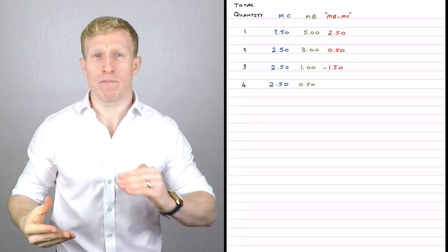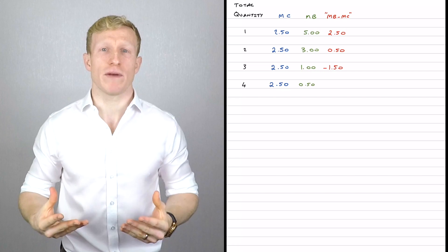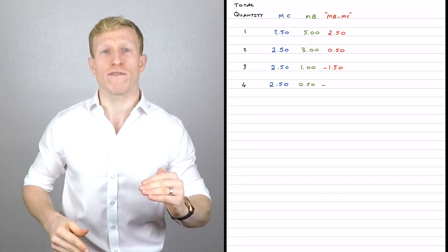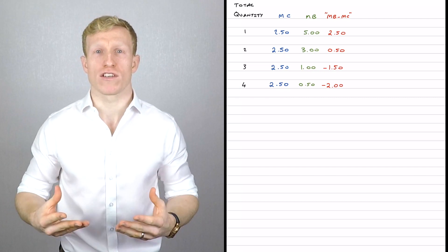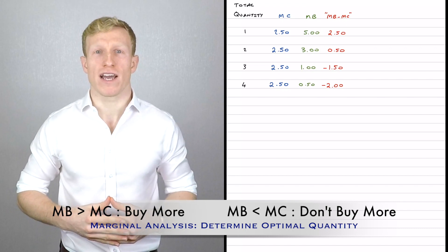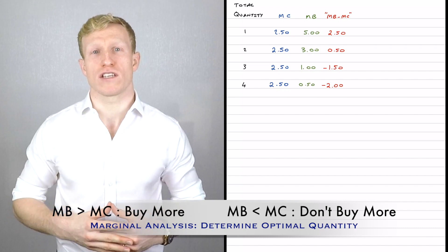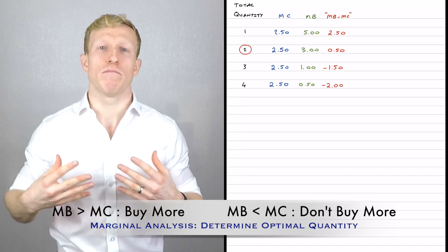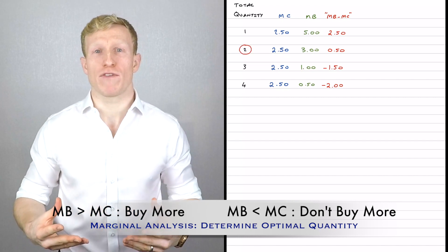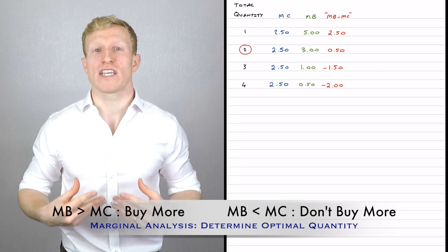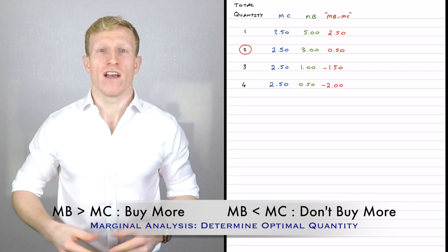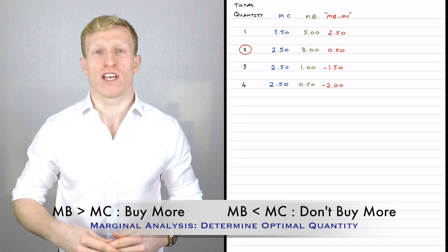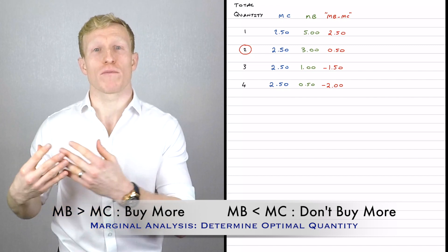Similarly for the fourth ice cream, with a marginal benefit of £0.50, it makes no sense to pay £2.50 for something you only value at £0.50. The key idea is we use marginal benefit and marginal cost to decide the optimal quantity to buy — in this example, two units. Buy more when marginal benefit exceeds marginal cost because you're making yourself better off; don't buy when marginal benefit is less than marginal cost.